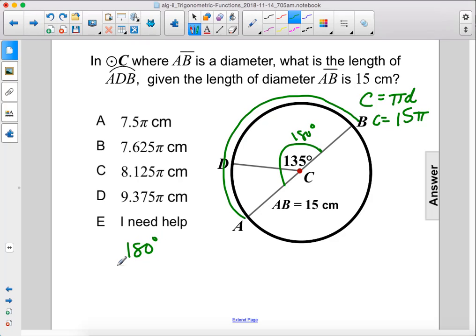So we take that angle and put it over 360, which is the full circle, and we see that's 1 half. We set that equal to the length of this arc, ADB, over the full circumference, which is 15π.